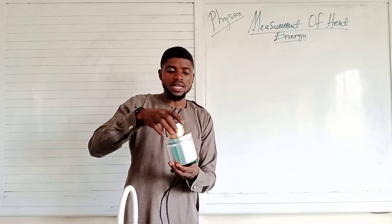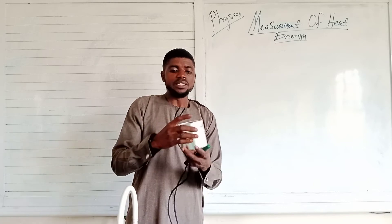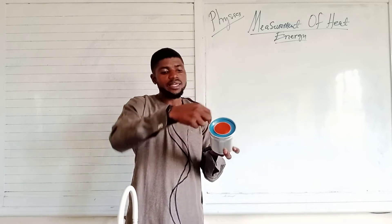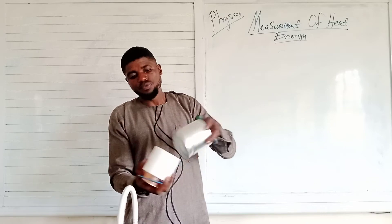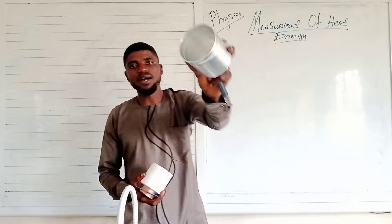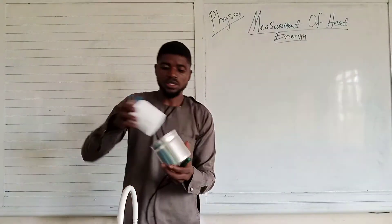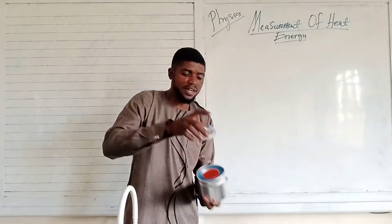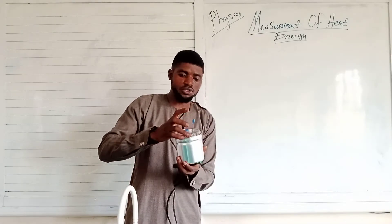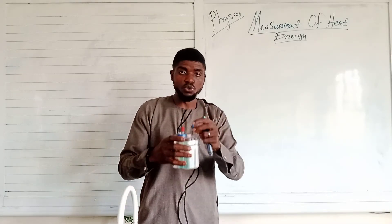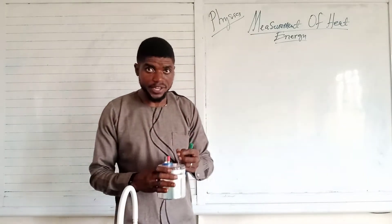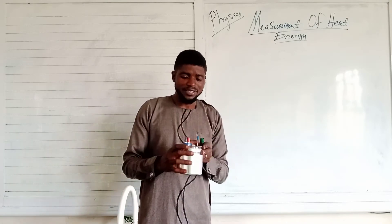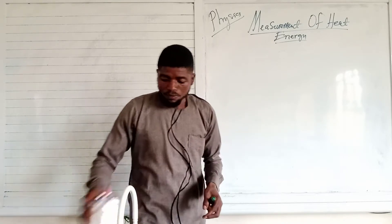The calorimeter is covered with silver on the inside and outside. It is built this way to prevent heat loss or heat gain through radiation. I hope that is a word of knowledge for you.